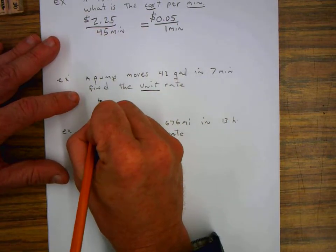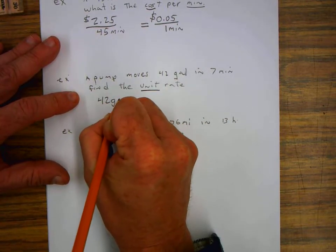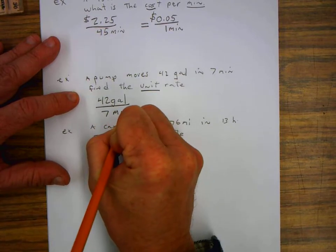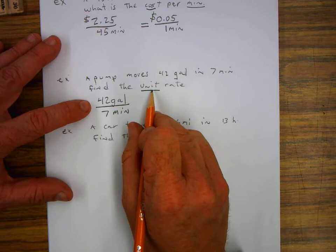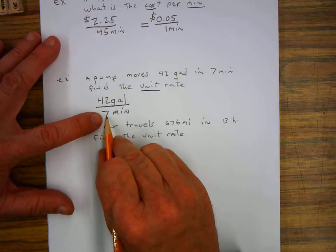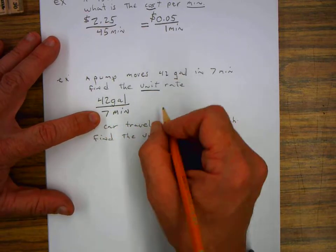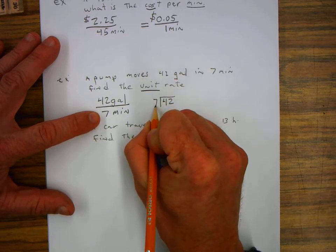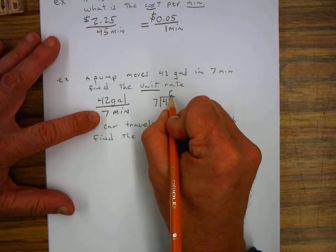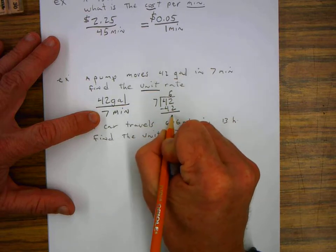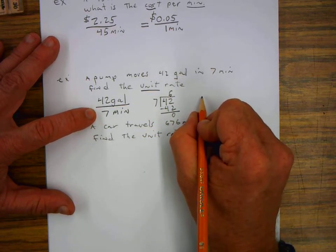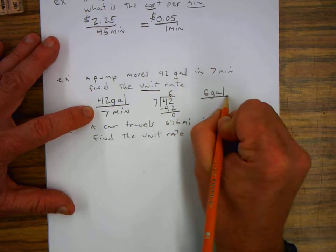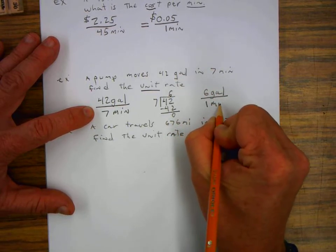So we know that it moves 42 gallons in 7 minutes. When we say unit rate, what we're saying is the denominator is going to be 1. So we take 42 and we divide it by 7. We know that 6 times 7 is 42. So our unit rate is 6 gallons per one minute.